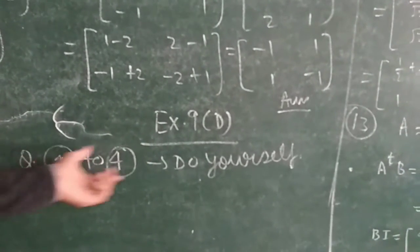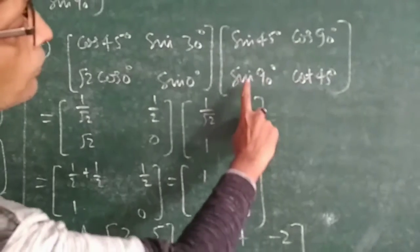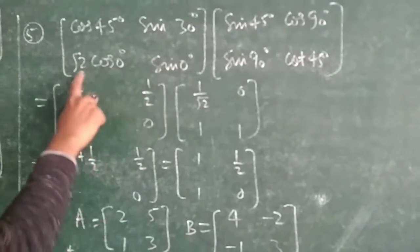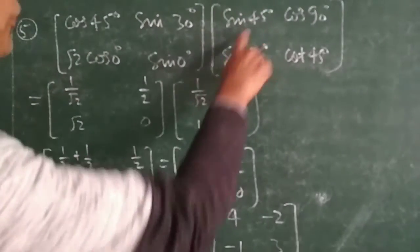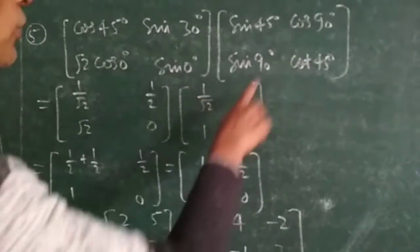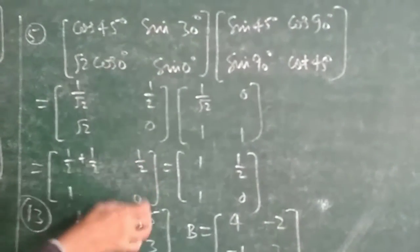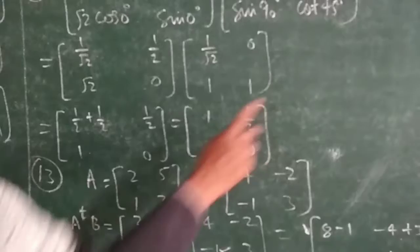Questions 1 to 4 of the next set you do yourself. Question 5 again involves a trigonometric matrix: cos 40°, sin 90°, sin 45°, cos 90°, sin 90°, cos 40°. Substituting values: sin 45° = 1/√2, sin 30° = 1/2, cos 90° = 0, sin 0° = 0. The next matrix has sin 45° = 1/√2, cos 90° = 0, sin 90° = 1, cos 45° = 1/√2. On multiplying, we get [1/2 + 1/2, 1/2; 1, 0] which equals [1, 1/2; 1, 0]. This is your answer.